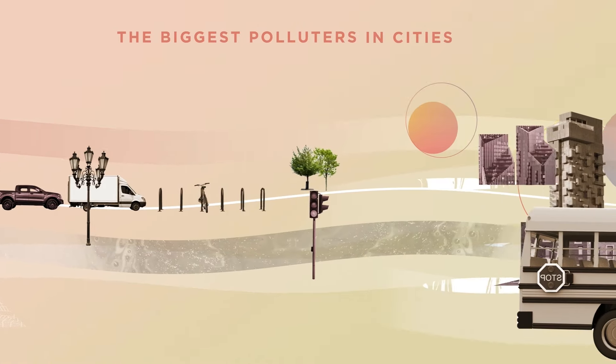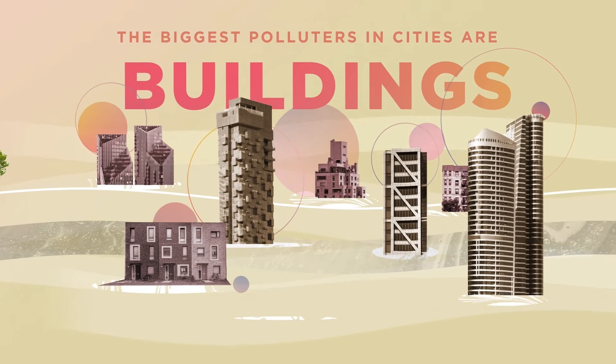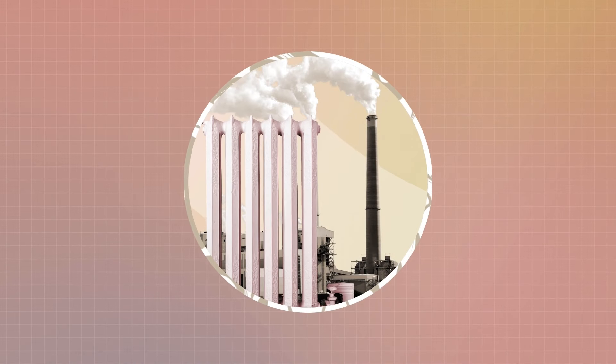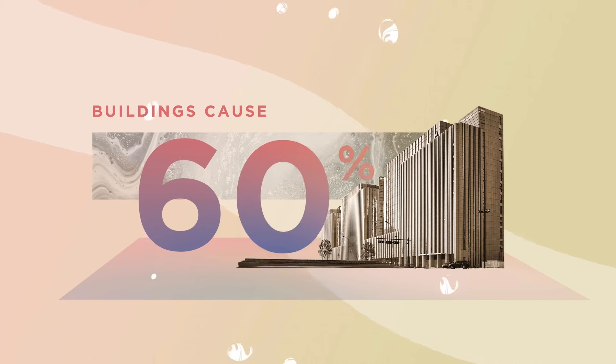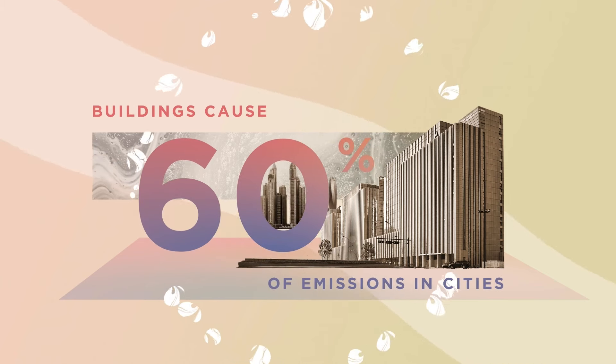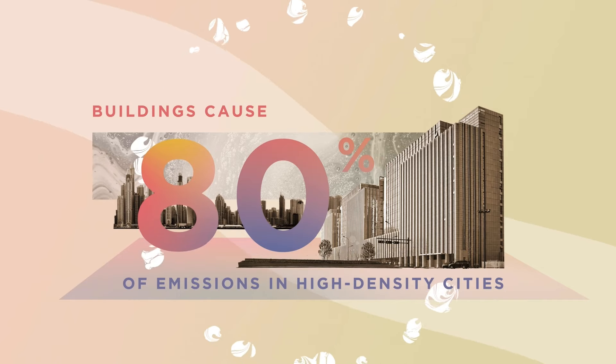The biggest polluters in cities are buildings. Powering, heating, and cooling the places where we live and work cost 60% of emissions in most cities. In high-density cities, that number can be up to 80%.